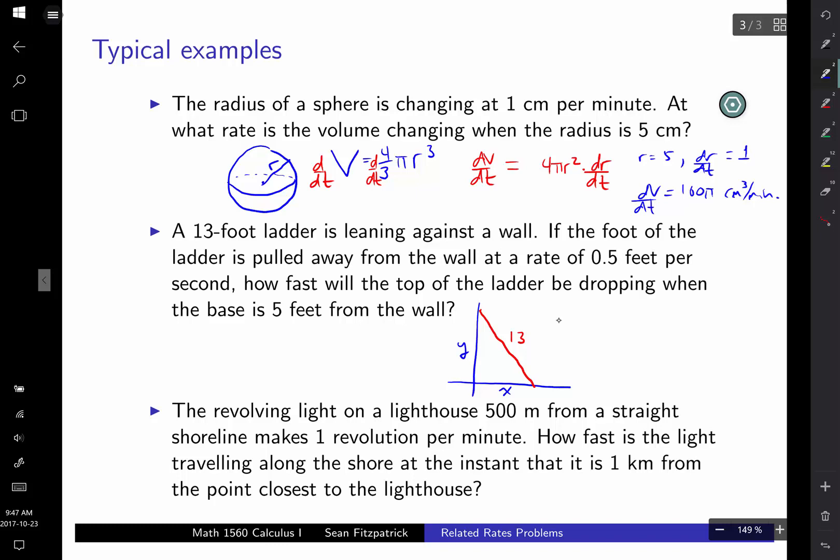Well, of course, assuming that this wall was installed properly, we can say that's probably a right angle, and so this time you've got Pythagoras. x² + y² = 13². And again,